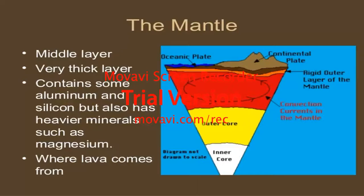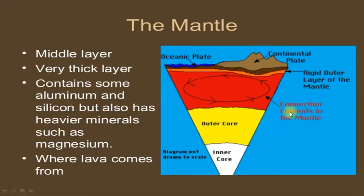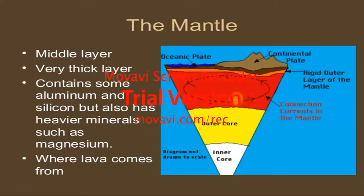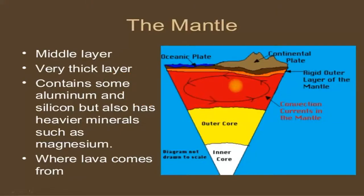The mantle has a rigid outer layer. Convection currents exist within the mantle. These convection currents in the mantle are responsible for changes on the upper layer of the Earth, including movement of the oceanic and continental plates.